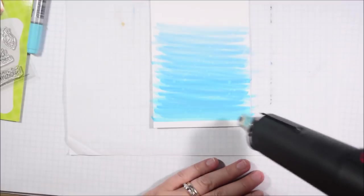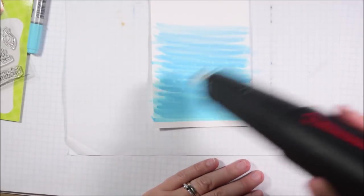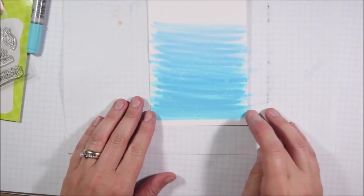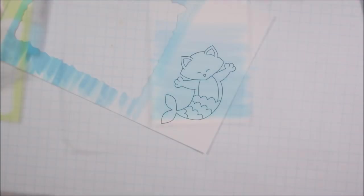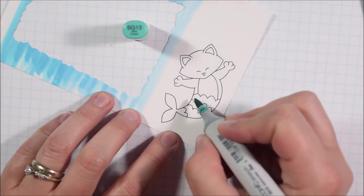Now because I'm using isopropyl alcohol, this alcohol is not the same alcohol that's in your markers, it's not the same alcohol that's in your colorless blender. So once you put this alcohol down I would actually not recommend coloring over it with Copics any longer.